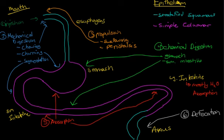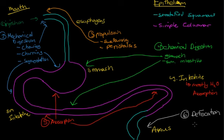So those are the six essential steps of food processing: ingestion, mechanical digestion, propulsion, chemical digestion, absorption, and defecation.